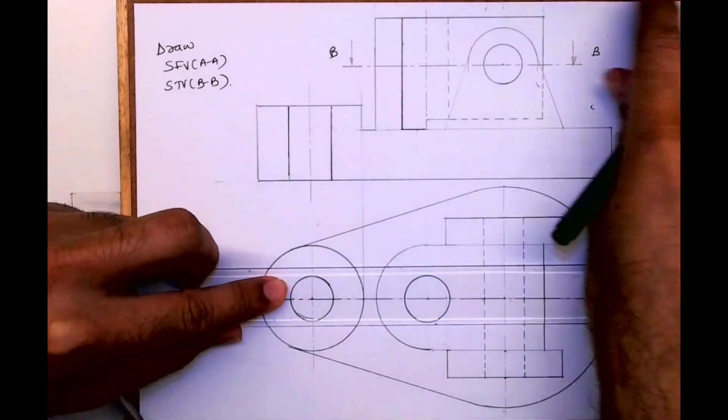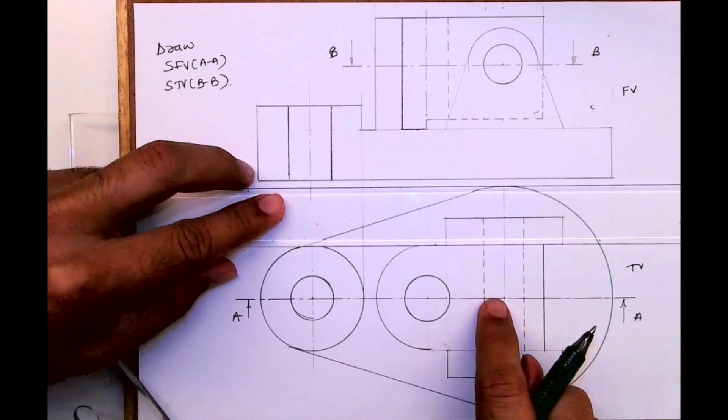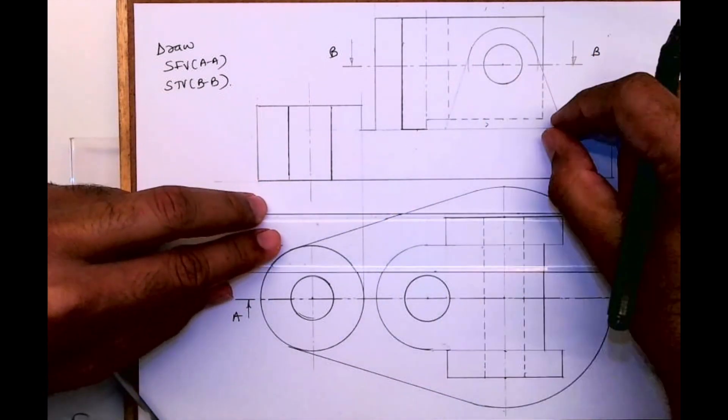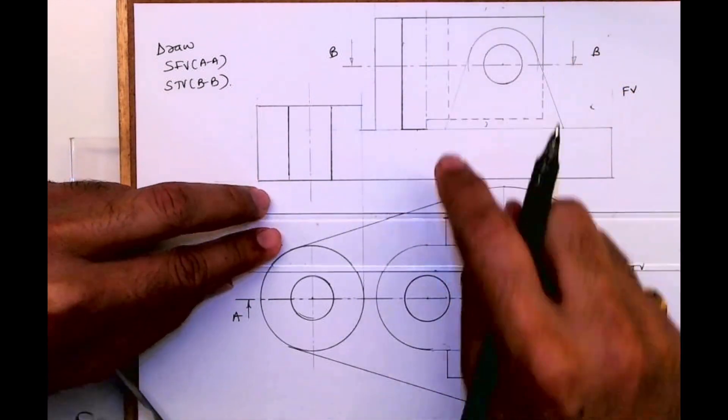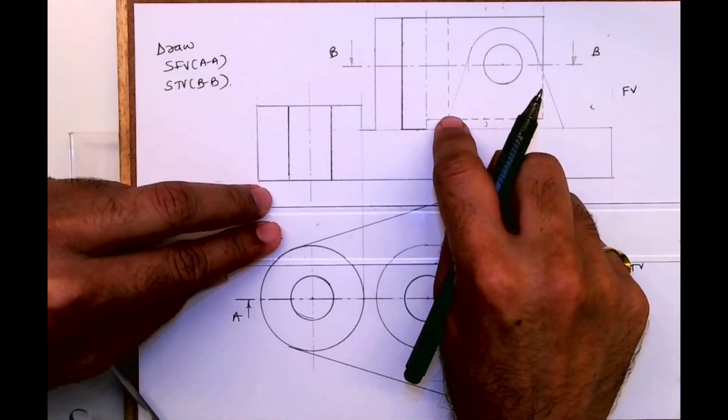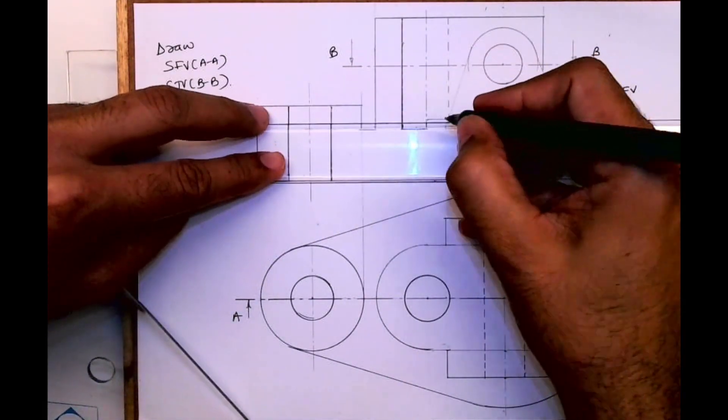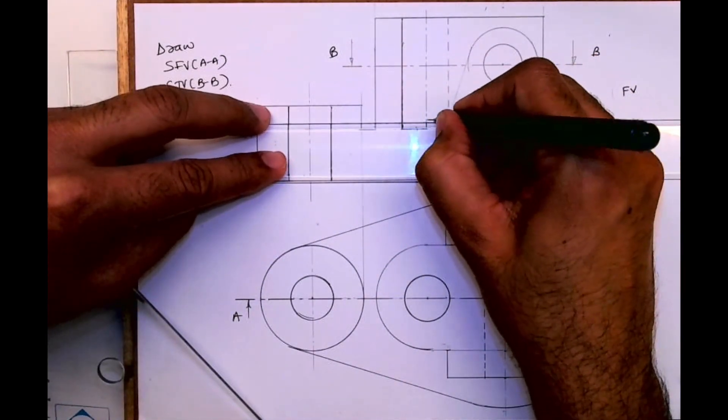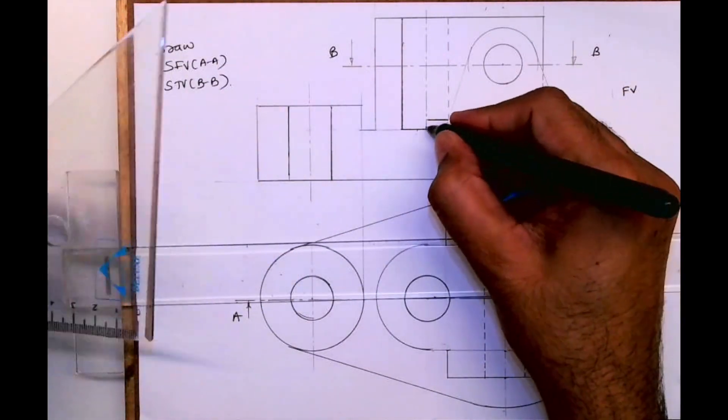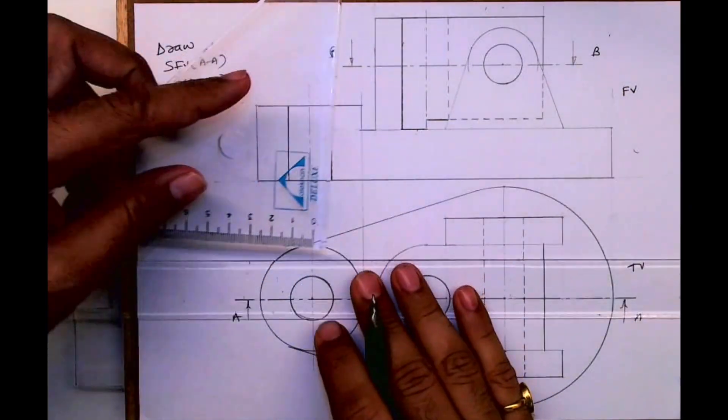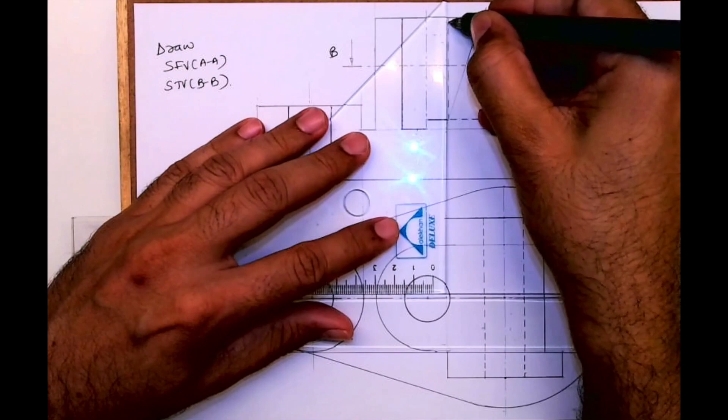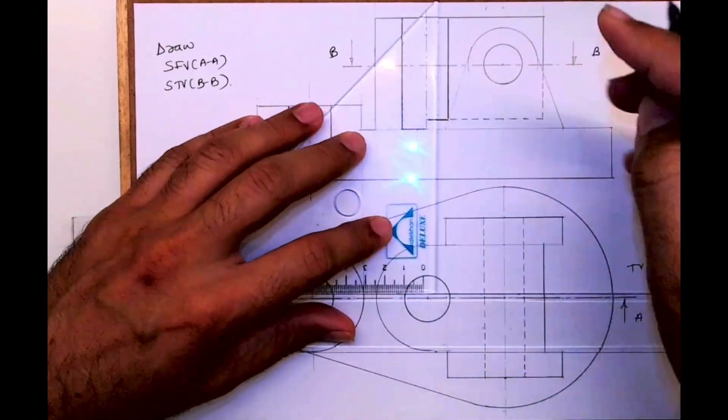If you see this part, this middle portion is 5mm above this, and this circle is only till here, it is not through and through. So again this portion will be dark. This is one of the best sums up till now I've got from missing view.